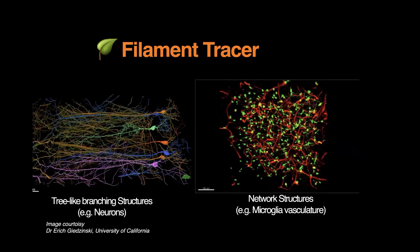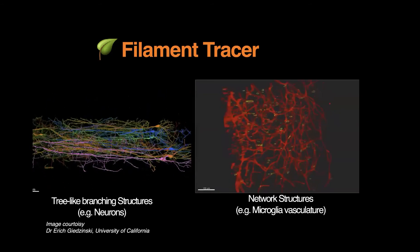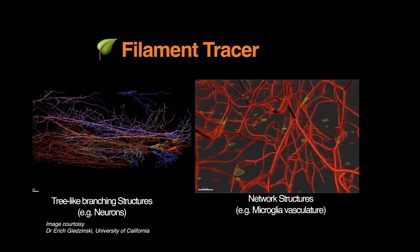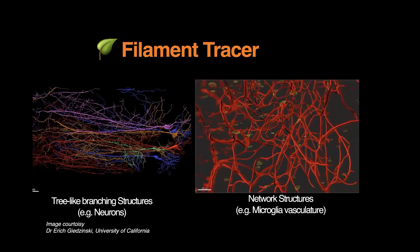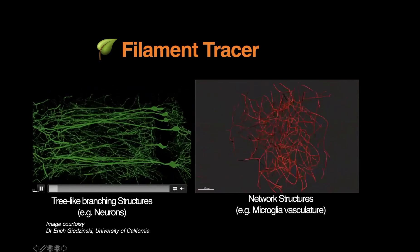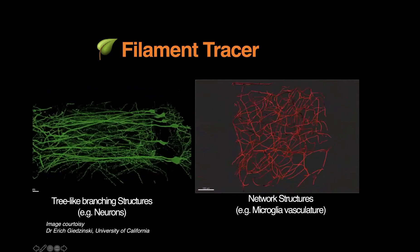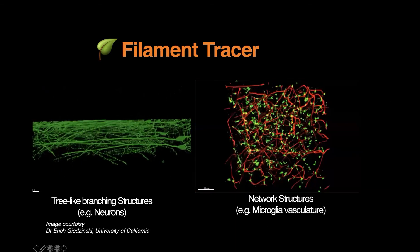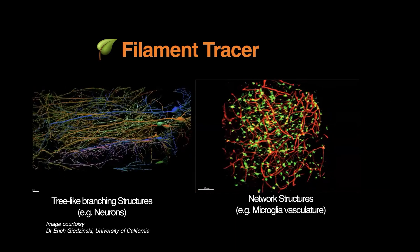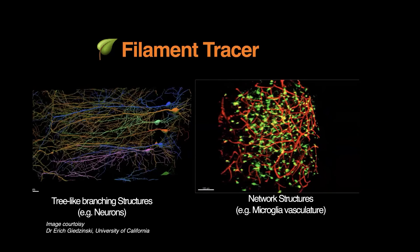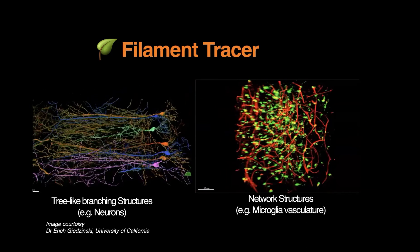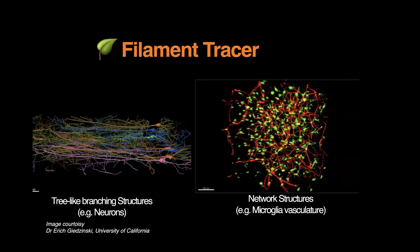Filament Tracer is for the analysis of filamentous structures. Two typical examples: on the left are tree-like branching structures, for example neurons; on the right is a network structure, for example the vascular system.